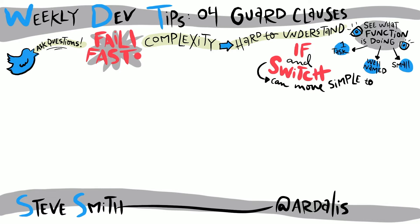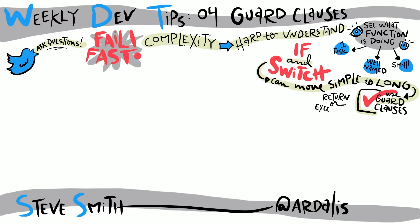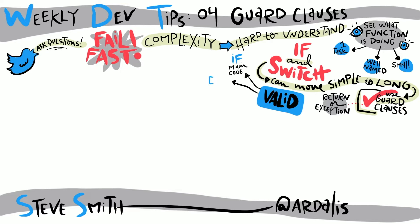One way you can cut down on some of the complexity is through the use of guard clauses. A guard clause is simply a check that immediately exits the function, either with a return statement or an exception. If you're used to writing code such that you ensure that everything is valid for the function to run, and then inside of the if statements where you've checked that things are valid, you write the main function code, and then you write else statements to deal with error cases, then using guard clauses tends to invert your current workflow.